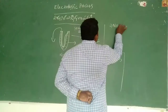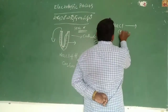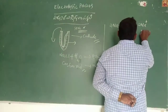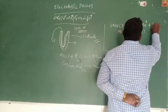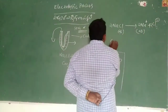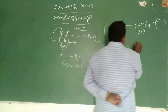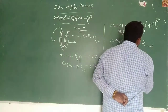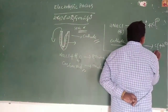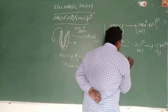Two moles of sodium chloride (aqueous) will form two moles of sodium (aqueous) plus two moles of chlorine ions. At the cathode, two moles of chlorine ions give up two electrons, and a gas escapes because of the aqueous medium.